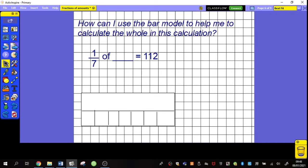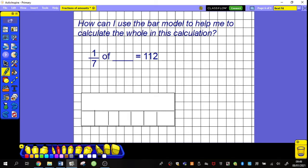How can I use the bar model to help me to calculate the whole in this calculation? Yesterday you were calculating the parts. Today we're going to be working in a different direction of trying to work backwards in order to calculate the whole. One seventh of something equals one hundred and twelve. I'm trying to find my something, I'm trying to find the whole.